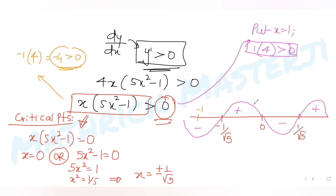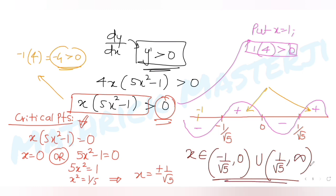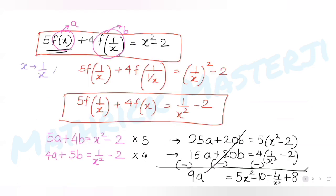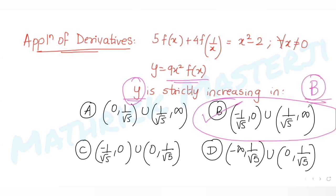Using the alternating sign pattern from the critical points, y is strictly increasing on (−1/√5, 0) and (1/√5, ∞). This matches option B: (−1/√5, 0) ∪ (1/√5, ∞), which is the correct answer.